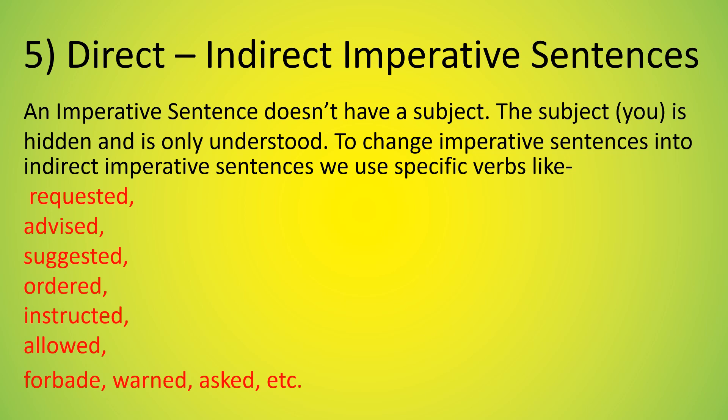Fifth type: direct and indirect imperative sentences. An imperative sentence doesn't have a subject — the subject 'you' is hidden and only understood. To change imperative sentences into indirect imperative sentences, we use specific verbs like requested, advised, suggested, ordered, instructed, allowed, forbid, warned, asked, etc.